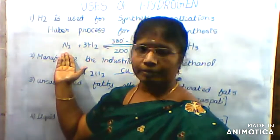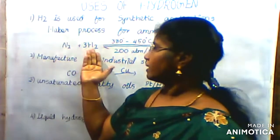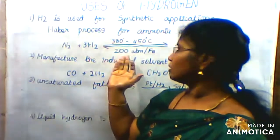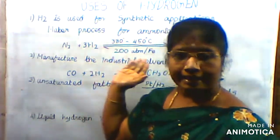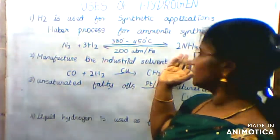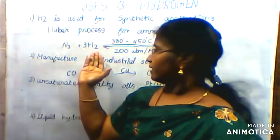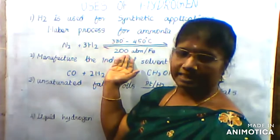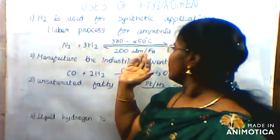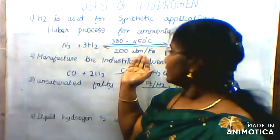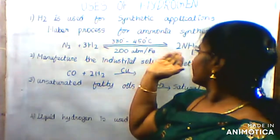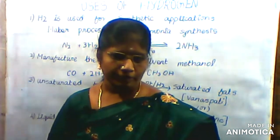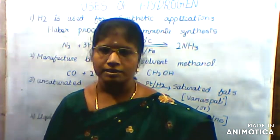Why are we going to prepare ammonia? Hydrogen is used at 380 to 450 degree Celsius temperature and 200 atmospheres pressure. Nitrogen plus 3 hydrogen gives ammonia at 380 to 450 degree Celsius, 200 atmospheres pressure, using iron as the catalyst. This is a very important process — we are going to synthesize ammonia.